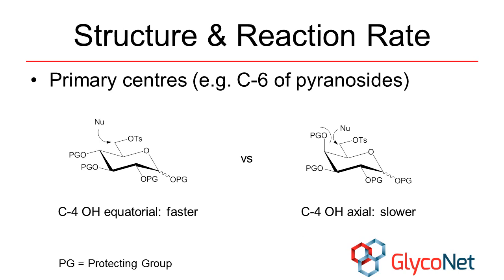The position of the leaving group being displaced will influence the speed of the reaction. For instance, reactions at primary centers, such as carbon-6 in pyranosides, usually proceed quickly in good yield.